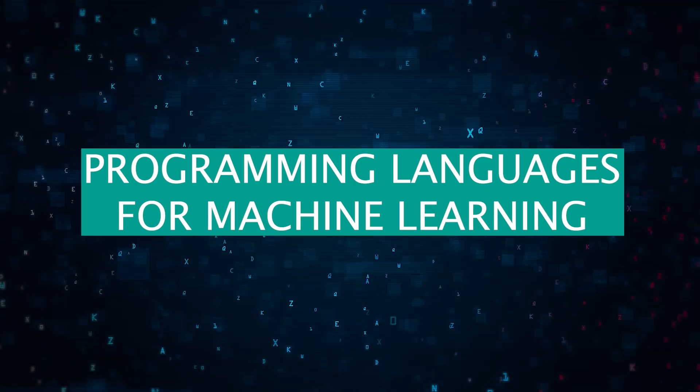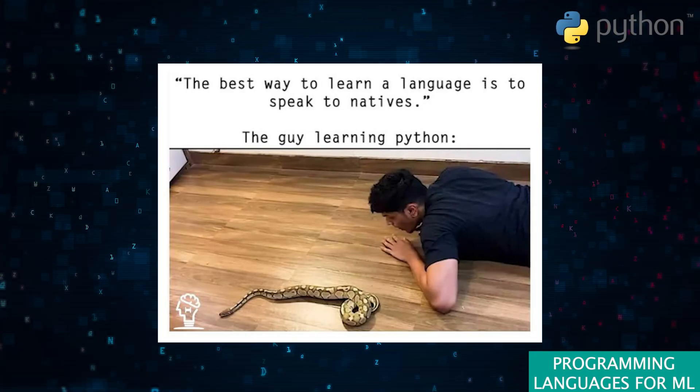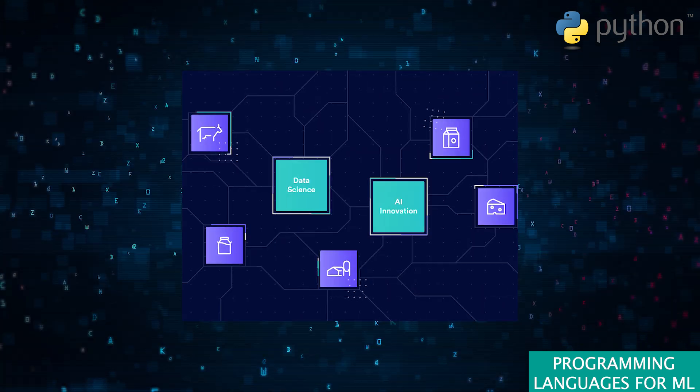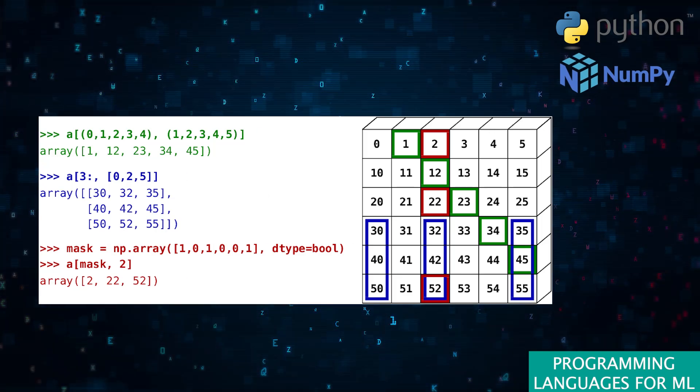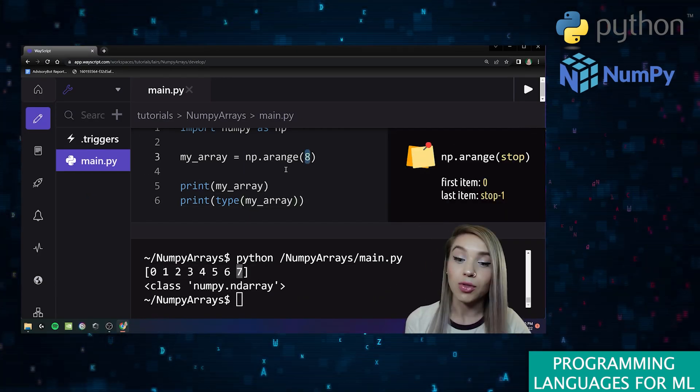To kick things off, let's talk programming languages. The backbone of machine learning is undoubtedly Python, revered for its simplicity and the wealth of libraries tailored for data science and ML applications. Notable mentions include NumPy, your go-to for scientific computing, perfect for handling large data arrays.